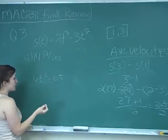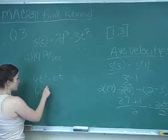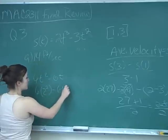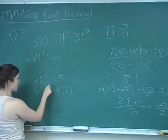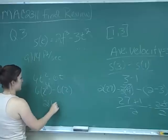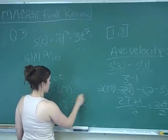And then we're wanting to know at t equals 2. So we've got 6 times 2 squared minus 6 times 2, 2 squared is 4, 6 times 4 is 24, minus 12, which is equal to 12.